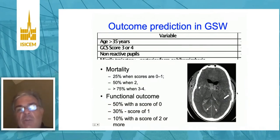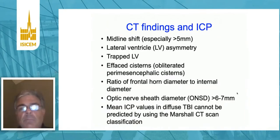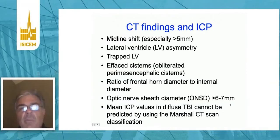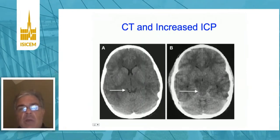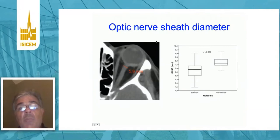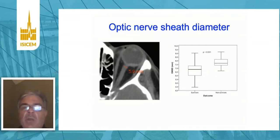Intracranial pressure often drives how we manage patients, and CT can be used to help define that. Midline shift, particularly more than five millimeters, asymmetry of the lateral ventricle or a trapped lateral ventricle, obliteration of the perimesencephalic cisterns, and optic nerve sheath diameter will suggest raised intracranial pressure. Here are obliterated perimesencephalic cisterns — in normal ICP they are open, but with increased intracranial pressure you no longer can see them. Optic nerve sheath diameter greater than six millimeters is usually associated with high intracranial pressure.